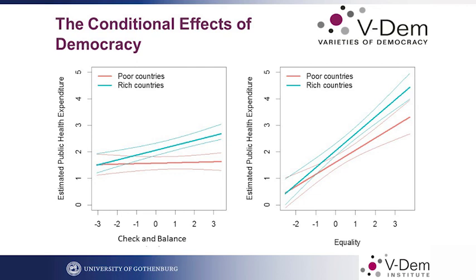However, for one of our indicators of health — public health expenditure — we find that the effect is actually very similar in poor and in rich countries. We find that the level of check and balance and the equality dimension, in both poor and rich countries, increase the level of check and balance and equality redistribution policy, and we find increased spending on public health.